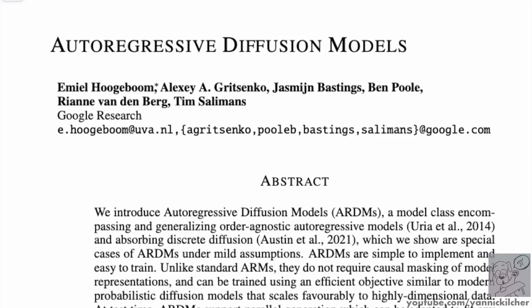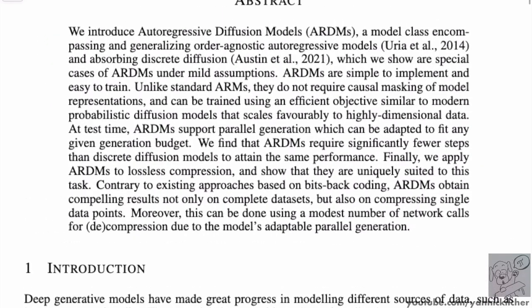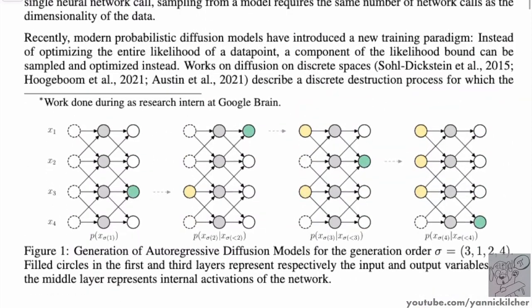This paper proposes a new type of autoregressive model, specifically one where variables can be decoded in arbitrary orders. This is akin to the new types of diffusion models used for generative models, and it essentially amounts to something like BERT in sequence.